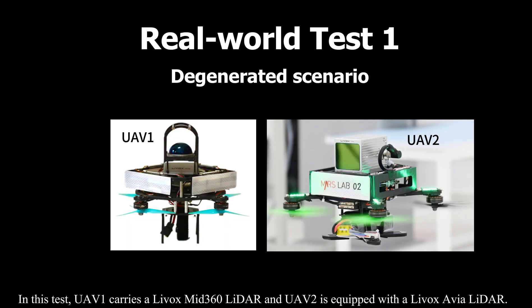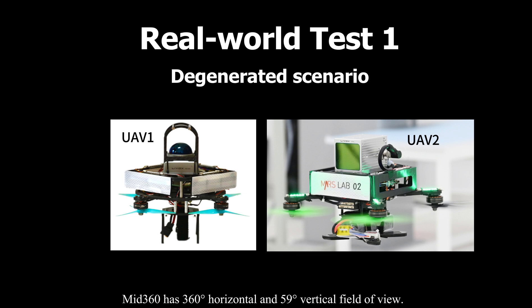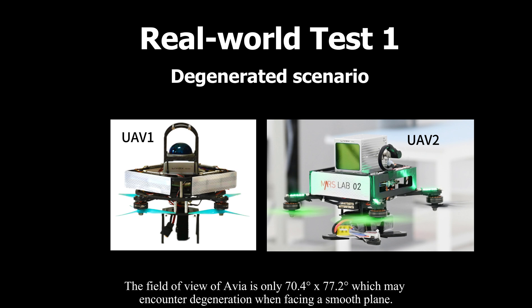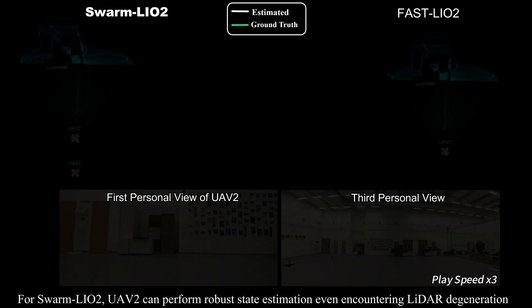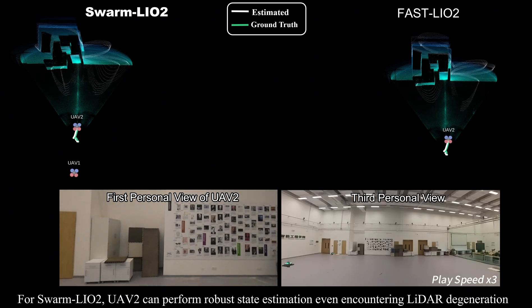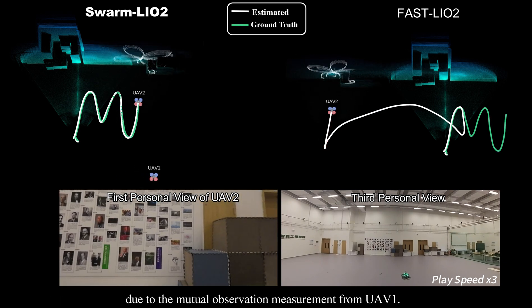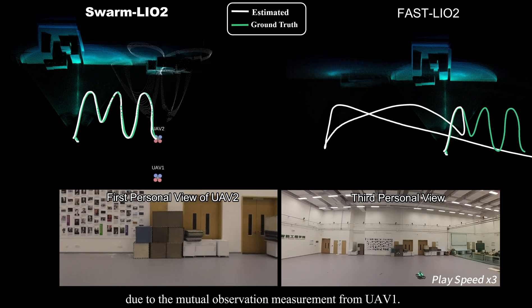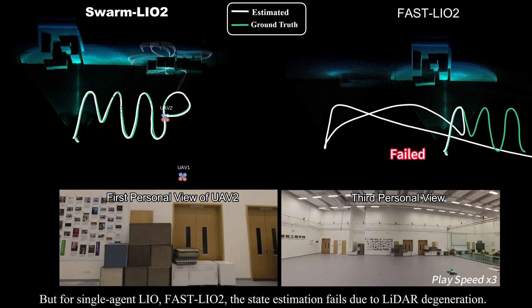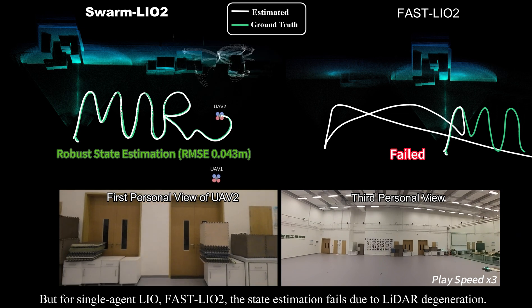In this test, UAV1 carries a Livox Mid360 LiDAR and UAV2 is equipped with the Livox Avia LiDAR. The Mid360 has 360-degree horizontal and 59-degree vertical field of view. The Avia's field of view is around 70 by 77 degrees, which may encounter degeneration when facing a smooth plane. For Swarm LiO2, UAV2 can perform robust state estimation even when encountering LiDAR degeneration, due to mutual observation measurements from UAV1. However, for single-agent LiO (Fast LiO2), the state estimation fails due to LiDAR degeneration.